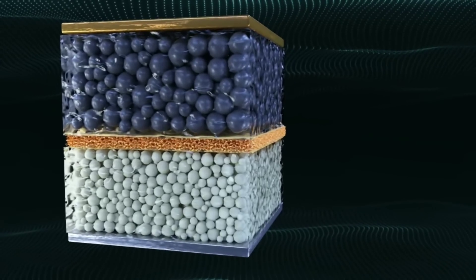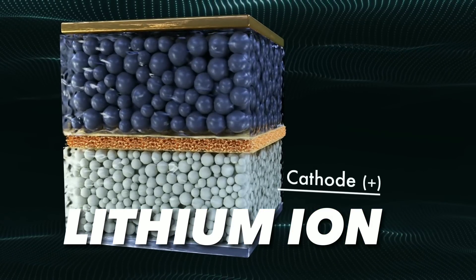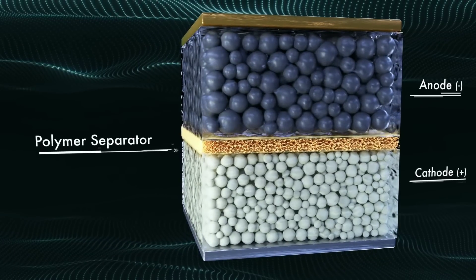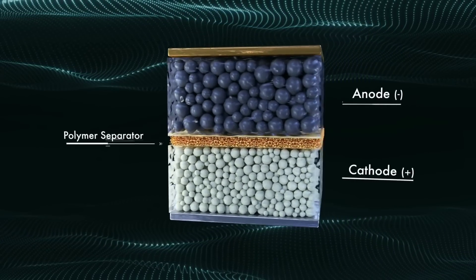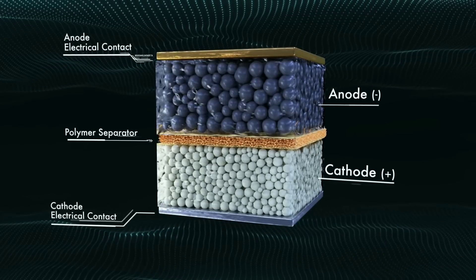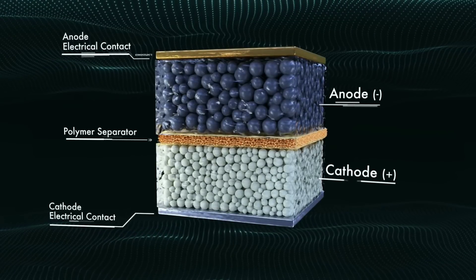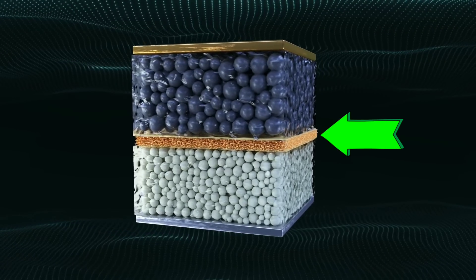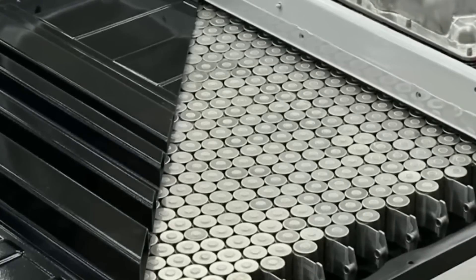A liquid electrolyte is a solution that carries lithium-ions between the positive and negative electrodes of a battery. It allows the battery to generate electricity by moving the ions back and forth. However, it also has some drawbacks. It is volatile and flammable at high temperatures. It can cause fire and explosion if there is a short circuit or physical damage. It also requires separators and casings to prevent leakage and corrosion.